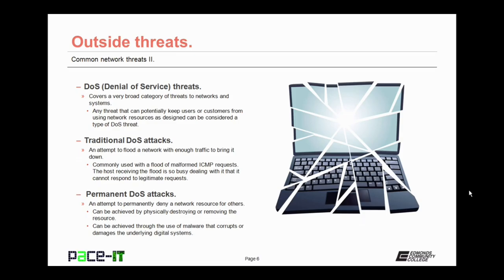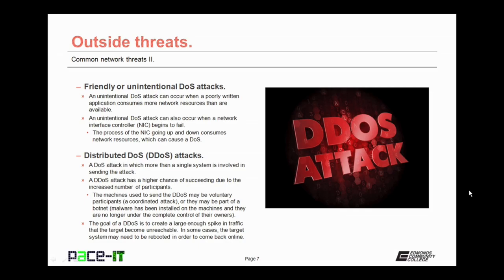Then there's the permanent DOS attack. It's an attempt to permanently deny a network resource for others. It can be achieved by physically destroying or removing the resource, or through the use of malware that corrupts or damages the underlying digital system to the point where it cannot be repaired and must be replaced. There are also friendly or unintentional denial of service attacks. An unintended DOS attack can occur when poorly written applications consume more network resources than are available. Another unintentional DOS attack can occur when a network interface controller, or NIC, begins to fail, going offline and coming back online repeatedly and rapidly, consuming network resources.